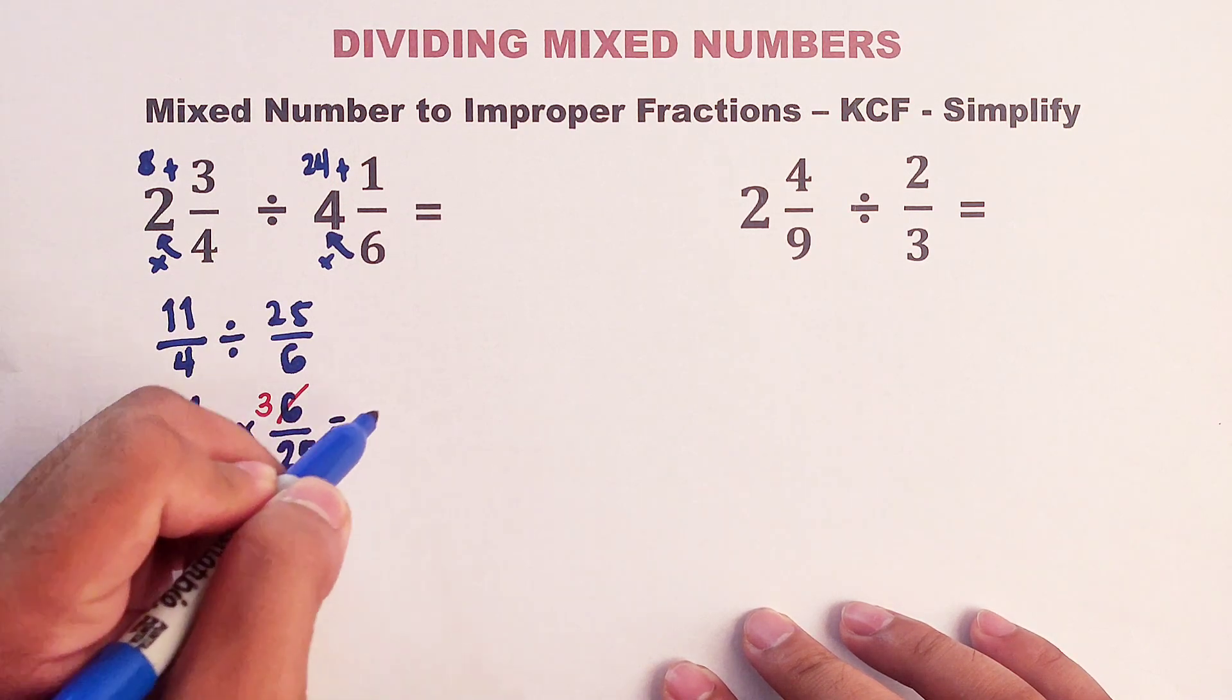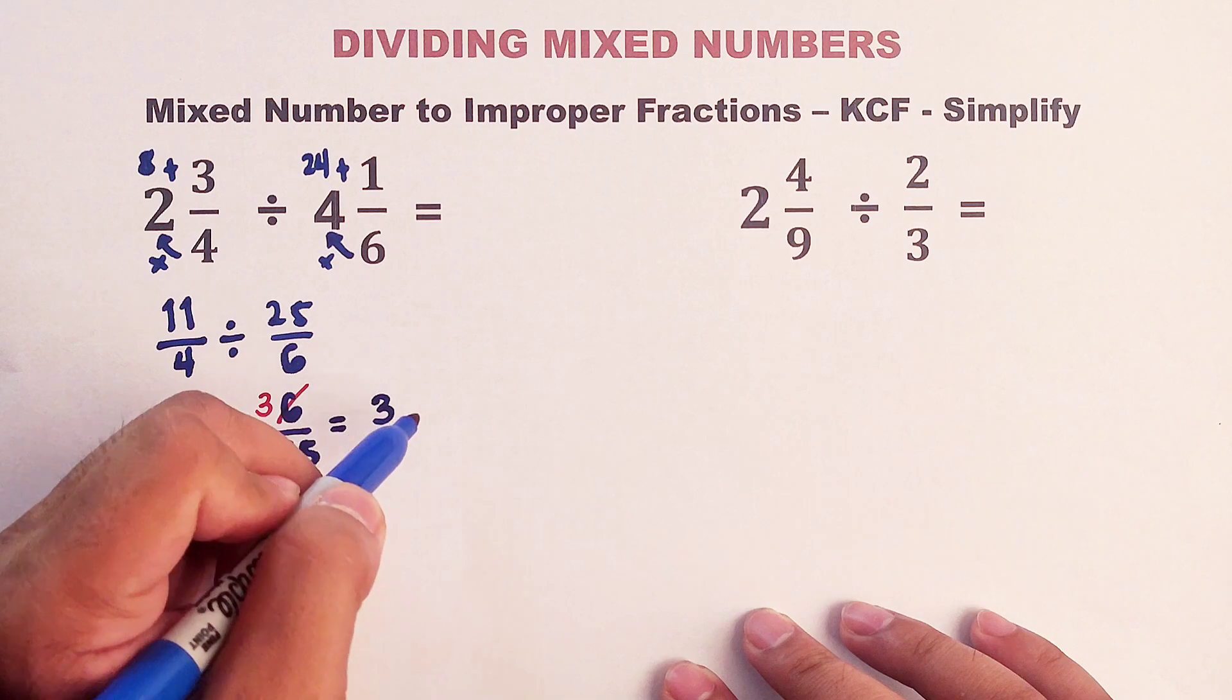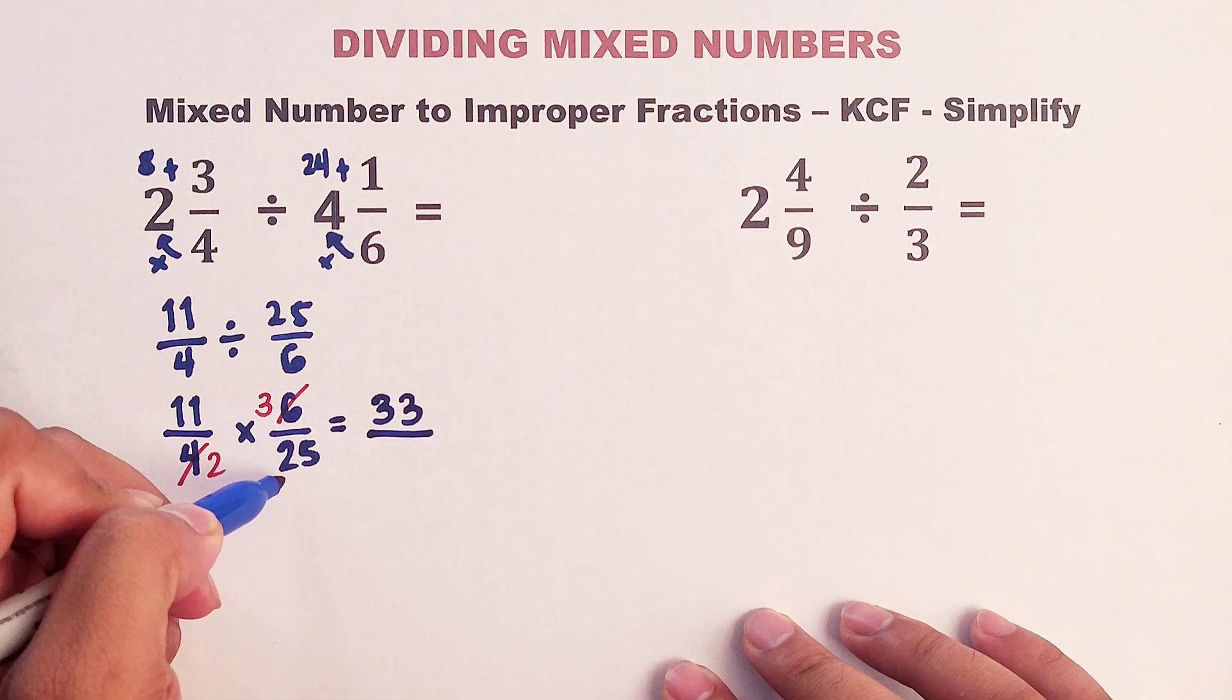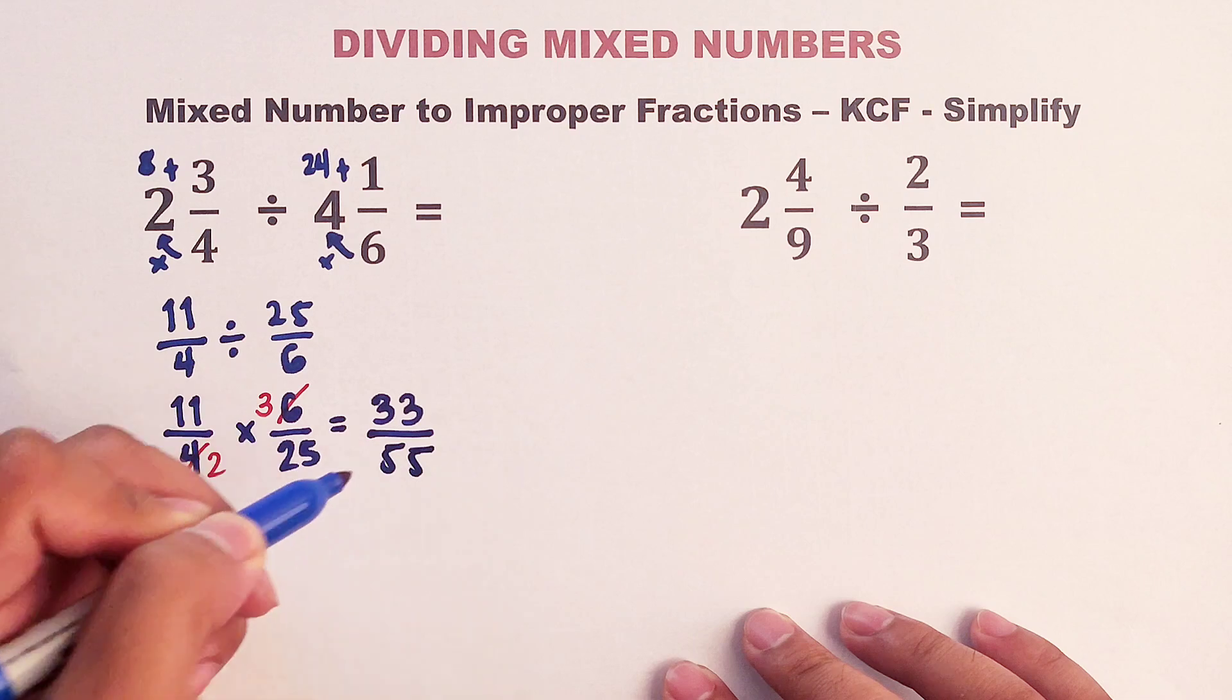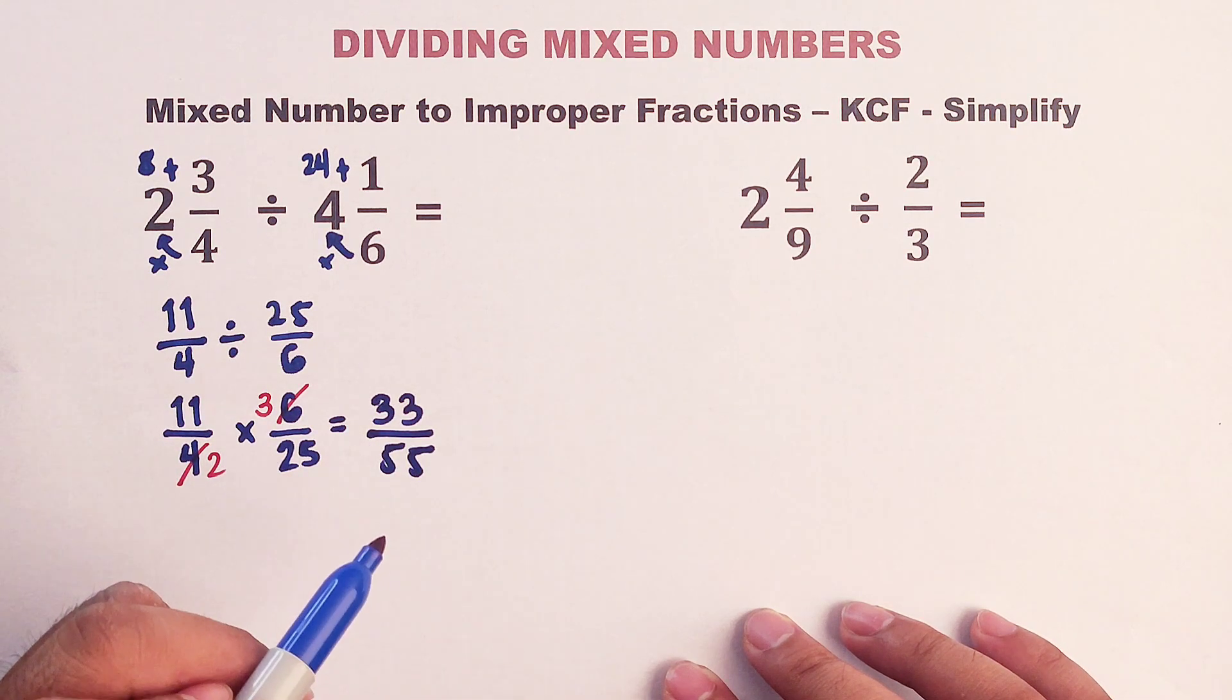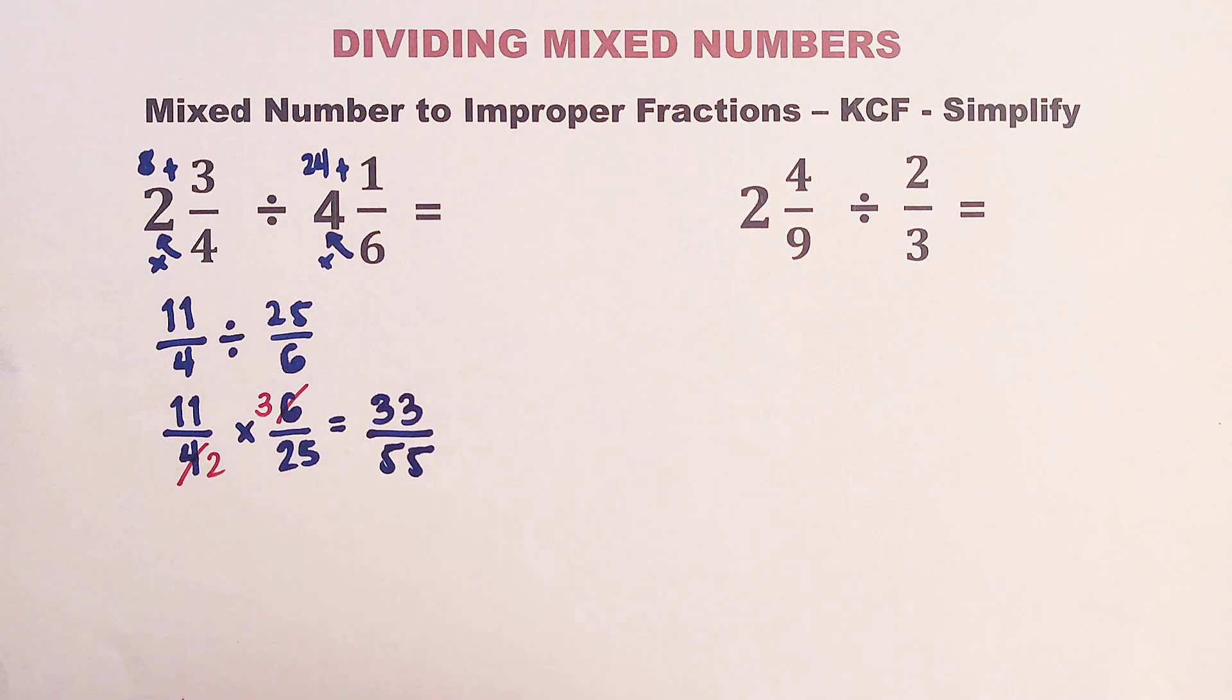So now we can directly multiply the numbers. We have 11 times 3. That is equal to 33 over 2 times 25. That would be equal to 50.